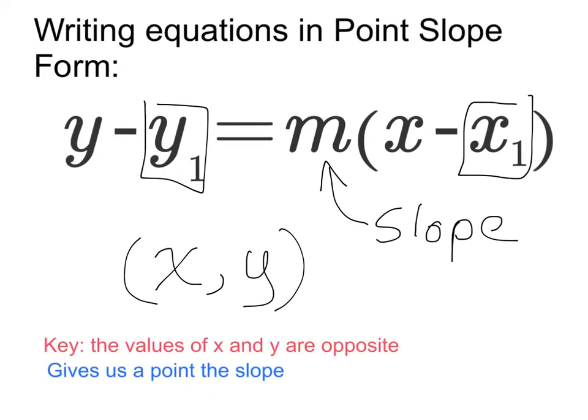The other key that we want to keep in mind is that the values of x and y are going to be opposite of what they look like in the equation. And that's because of the minus signs here in this form. So we'll talk about that more in a second.